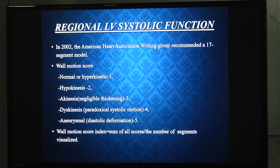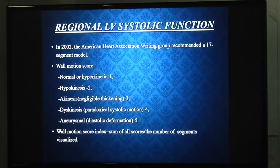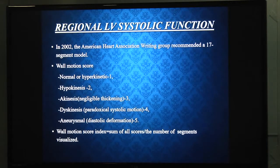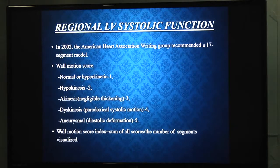For regional LV systolic function, the AHA writing group in 2002 recommended the 17-segment model. All 17 segments are assessed using 5 basic views, and a wall motion score is assigned to each segment. If a segment is normal or hyperkinetic, it receives a score of 1. If it is hypokinetic, a score of 2. If it is akinetic — meaning negligible thickening of the LV cavity — a score of 3.